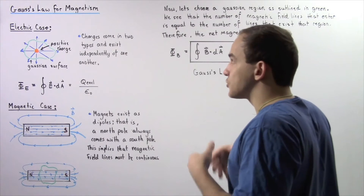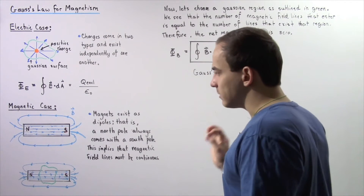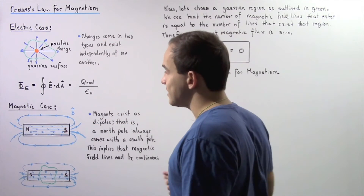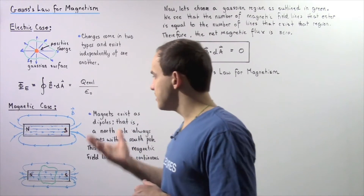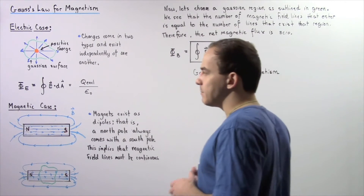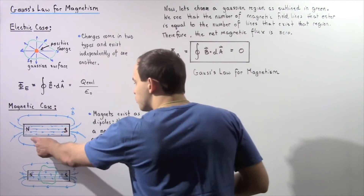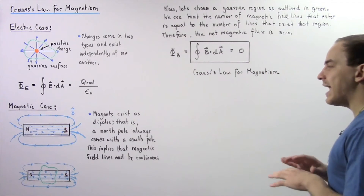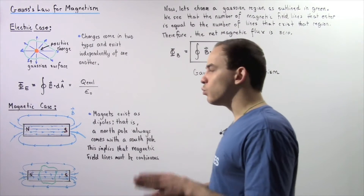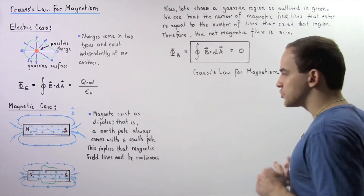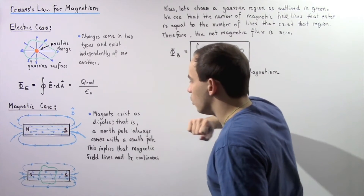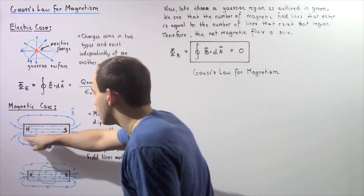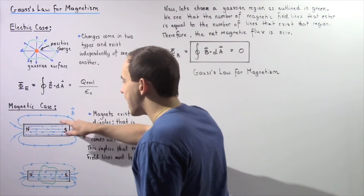Let's discuss the analogous law for magnetism by examining the following magnet. In the electric case, we discussed electric charges; in the magnetic case, we're going to examine magnets. Let's suppose we have the following bar magnet. Recall that anytime we have any sort of magnet, that magnet will always have a north pole and a south pole — so magnets exist as dipoles. We have a north pole and a south pole.